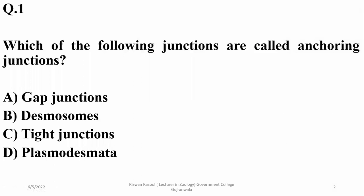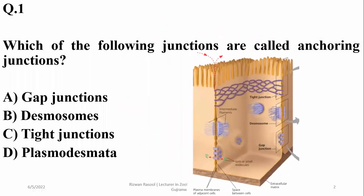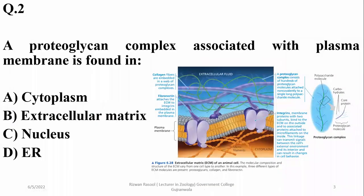Question 1: Which of the following junctions are called anchoring junctions? Anchoring junctions are specifically desmosomes, found in different cells for holding cells together. Gap junctions are common in cardiac muscle cells. Plasmodesmata are referenced in plant cells. So anchoring junctions is another name for desmosomes. The proteoglycan complex is associated with the plasma membrane, having glycoproteins in the extracellular matrix. Right option is B.